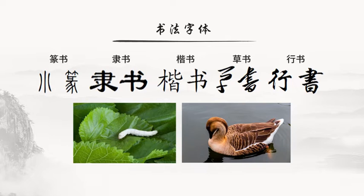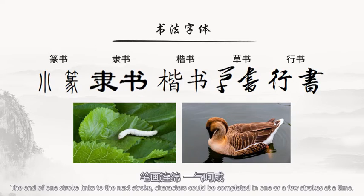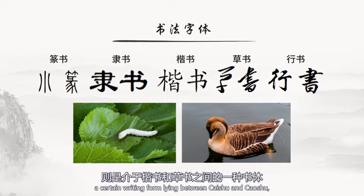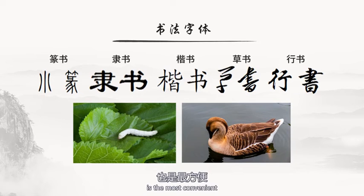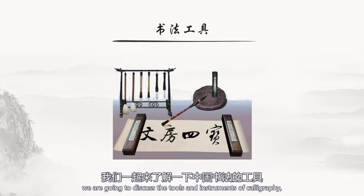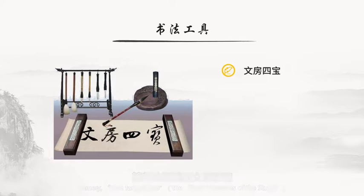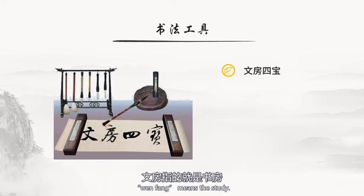隶书书写讲究蚕头燕尾，即笔头像蚕的头一样圆润，结笔像大燕的尾巴一样。楷书由隶书逐渐演化而来，笔画更为平直，是字体中的楷模，所以称为楷书。草书也是由隶书演化而来，它的特点是字体结构简省、笔画连绵、一气呵成。行书则是介于楷书和草书之间的一种书体，也是最方便、最常用的手写体。